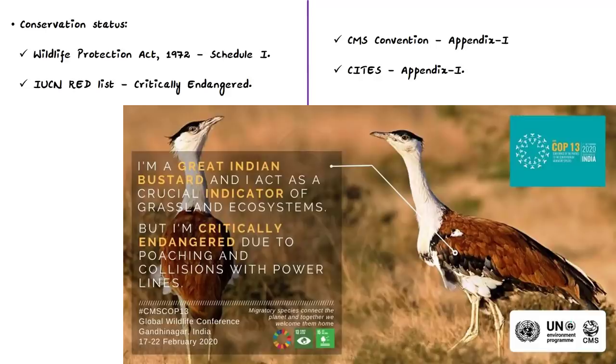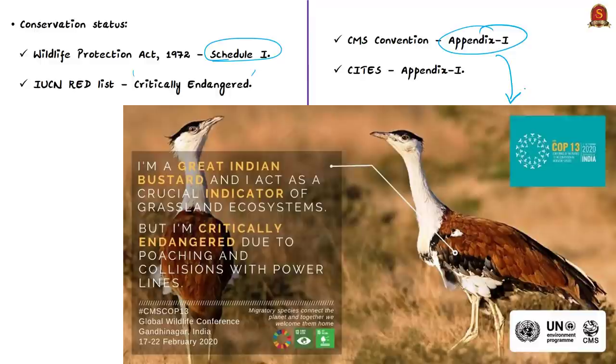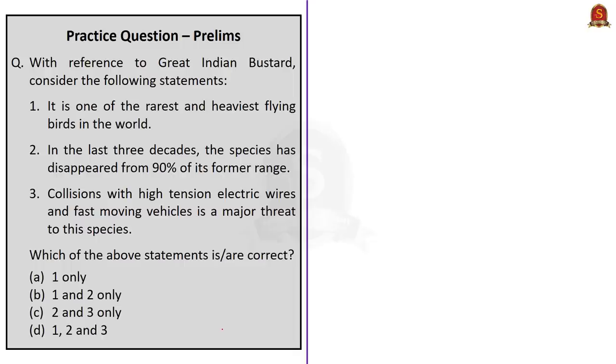Let us see the protection status of this bird. It is protected under Schedule 1 of Wildlife Protection Act of 1972. It is listed as critically endangered in the IUCN Red List. It is also listed in Appendix 1 of the Convention on the Conservation of Migratory Species of Wild Animals or CMS, and also in Appendix 1 of the Convention on International Trade in Endangered Species of Wild Fauna and Flora or CITES. Now see this practice question. With reference to Great Indian Bustard, consider the following statements: It is one of the rarest and heaviest flying birds in the world. This statement is correct. In the last three decades, the species has disappeared from 90% of its former range. This statement is also correct. Collisions with high-tension electric wires and fast-moving vehicles is a major threat to this species. This statement is also correct. Since all three statements are correct, the correct answer is Option D: 1, 2 and 3. With this, we have discussed all the relevant news articles from today's The Hindu newspaper.